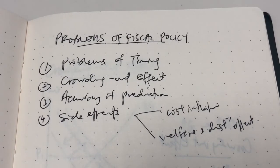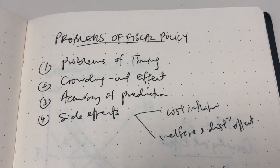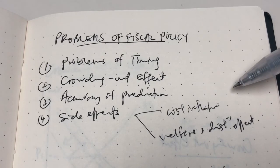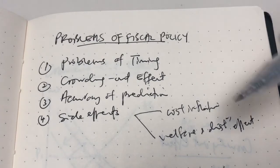such as cost inflation and welfare and distribution effect. What does it mean by cost inflation? Say the economy is experiencing very high inflation, or somehow the economy is overheating.